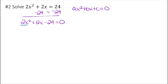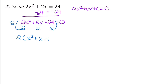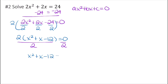Every term is divisible by 2, so factor out a 2 and divide all terms by 2. That gives 2 times x squared plus x minus 12 equals 0. Dividing both sides by 2 leaves x squared plus x minus 12 equals 0.